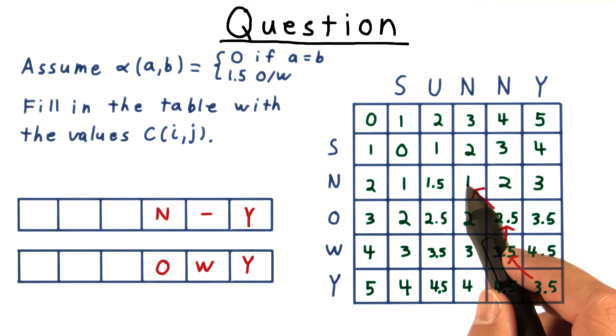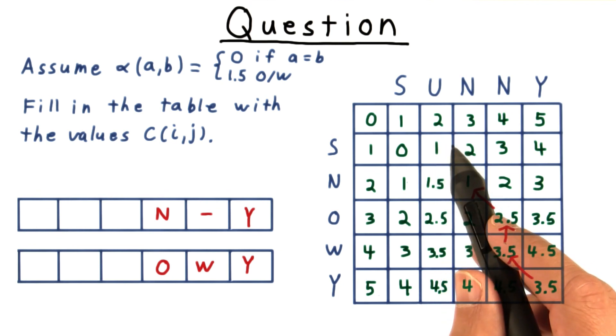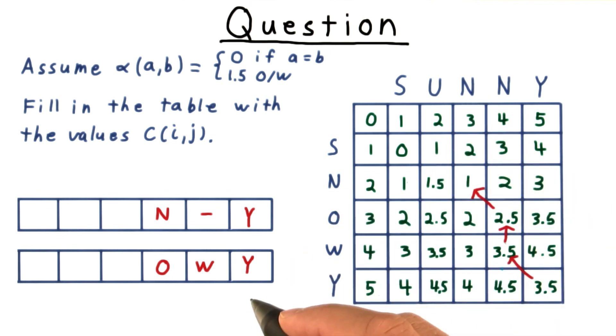Then we have a cost 1, which must have come from this northwest neighbor, so these n's get matched.